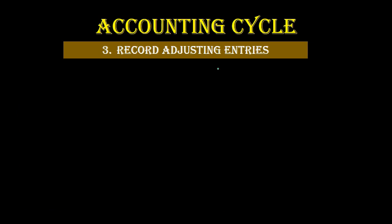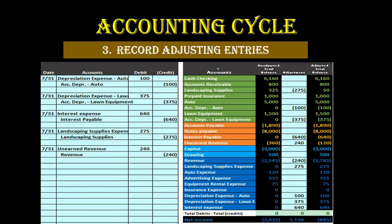Then we record the adjusting entries. The adjusting entries are those made as of the end of the month — in this case 7/31 — all of them made as of the end of the month. These are our timing journal entries, meaning we're making sure our financial statements are correct on an accrual basis, looking at those accounts that always need adjustment — accounts like prepaid insurance, accumulated depreciation, interest payable, and unearned revenue. Those accounts typically need some type of adjustment, and that's just the way the system is built.